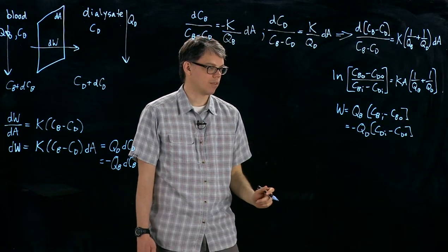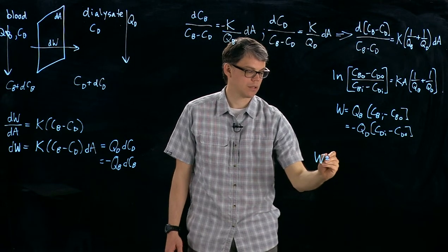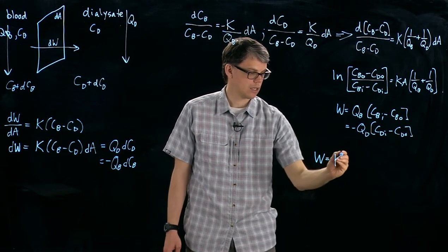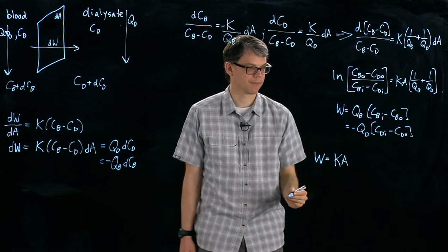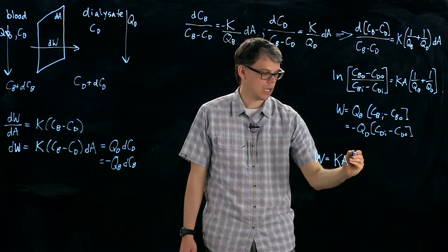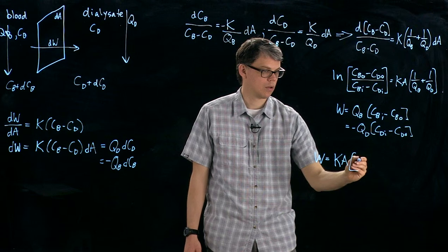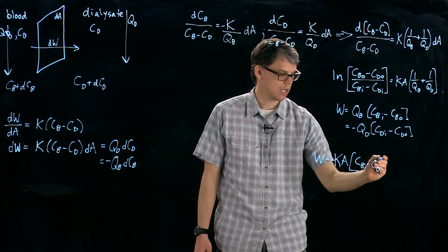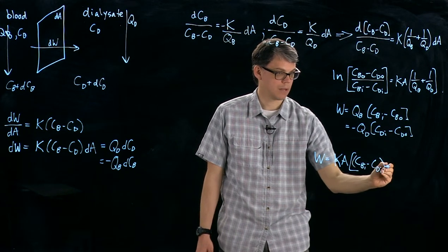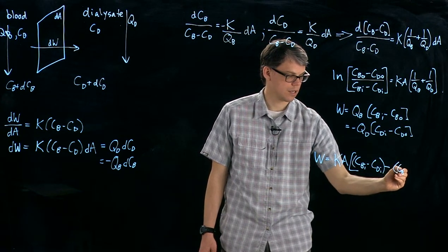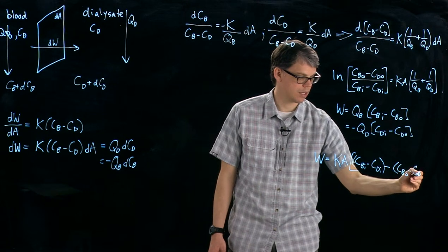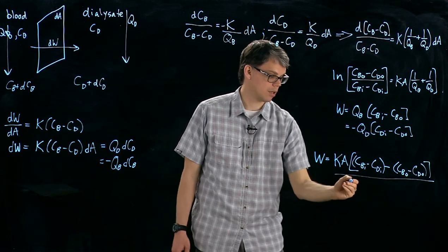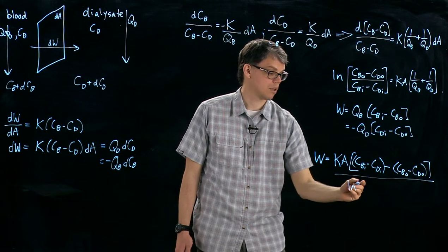And so if we do that and we plug in for QB and QD into this piece right here, what we can end up with then is again our equation for W. And so I'm skipping some algebra here, but hopefully you can check my work. And we end up with the difference in concentration on the inlet minus the difference in concentration at the outlet of the dialyser over that natural log piece that we have there.